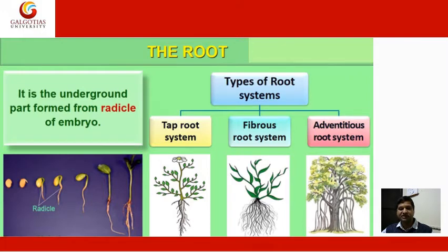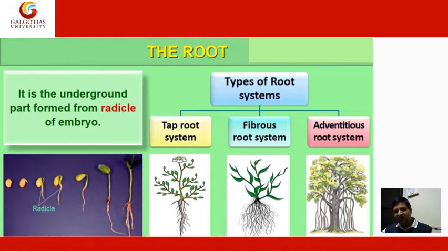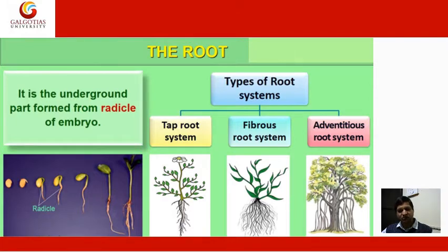Types of root system: we have three types. First is the tap root system. Second is the fibrous root system. And third is the adventitious root system. All three examples are also given here, so you will easily understand the basic difference between the tap root, fibrous root, and adventitious root system.